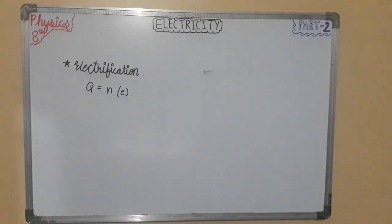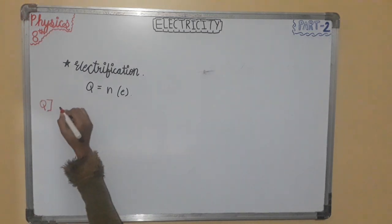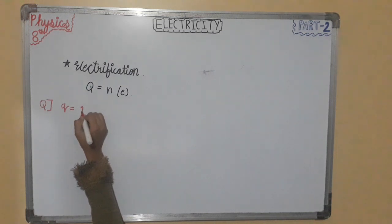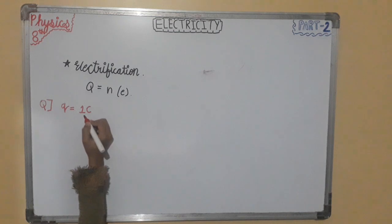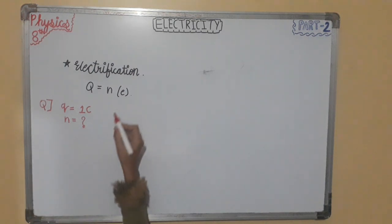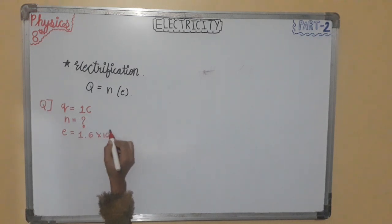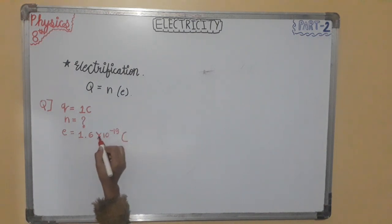Question number one: find the number of electrons in one coulomb of charge. Given that Q, the charge, is 1 coulomb. We need to find n. We know that e, the charge of one electron, is 1.6 × 10⁻¹⁹ coulomb. This is the fixed value of the electron.